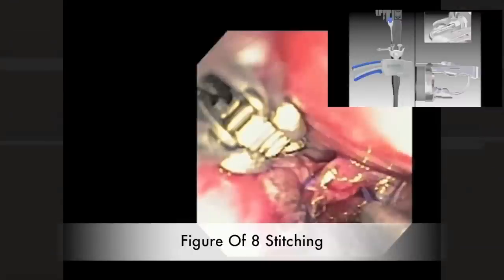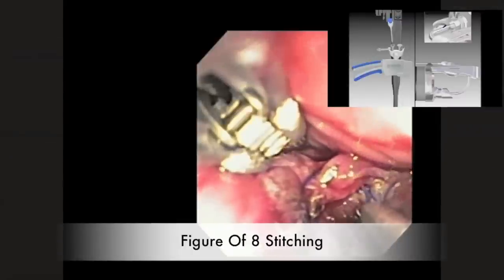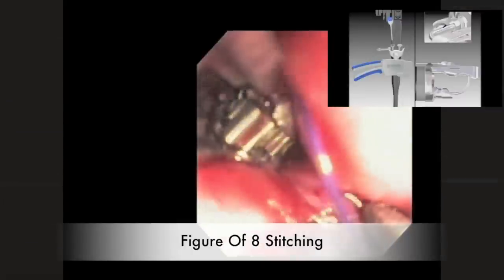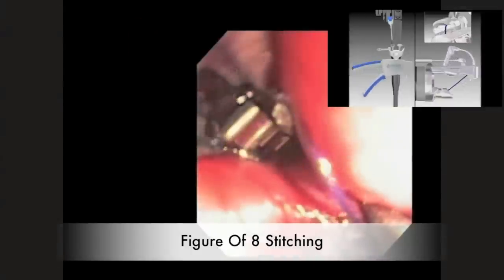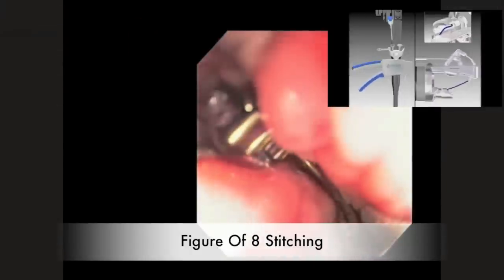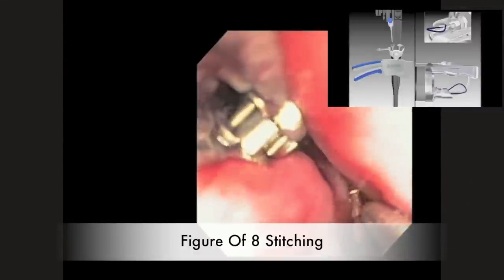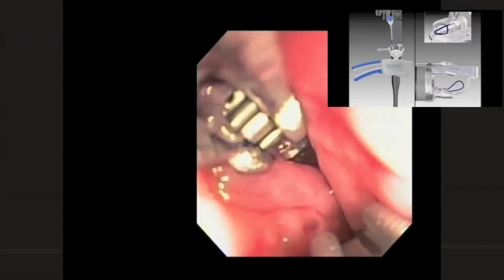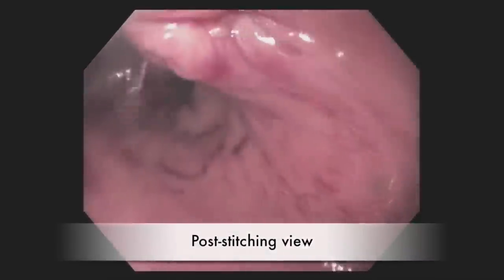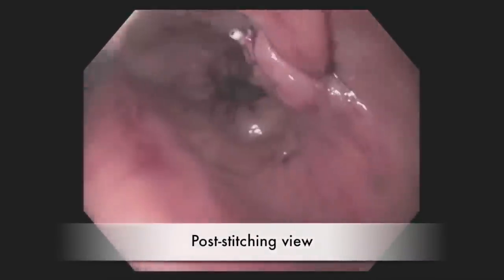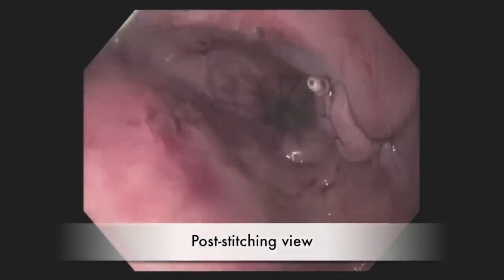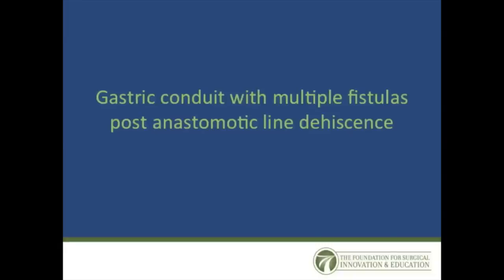A figure-of-eight stitch was placed endoscopically to completely close the perforation. In the top right corner one can see the mechanism of the Apollo overstitch. One can see the post-stitching view with a cinch.